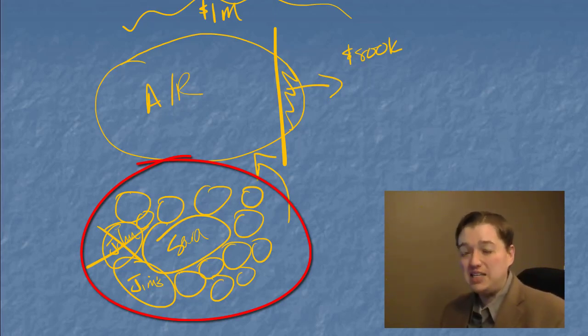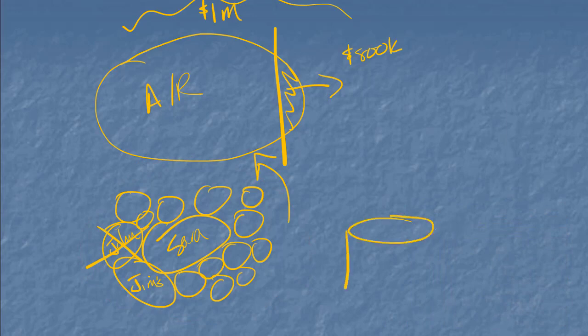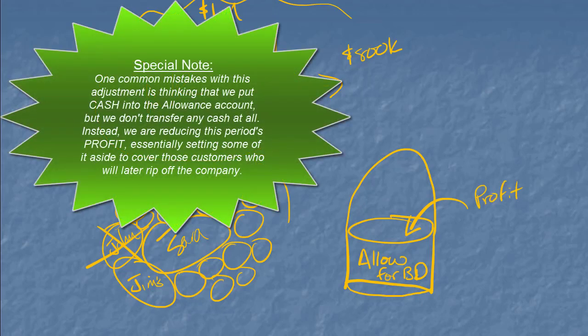So instead, we came up with a different idea for allowing us to keep track of what account receivable is really worth. What we decided to do was create, well, perhaps the best way to think of it is as a bucket. It's not a very good picture, but hopefully you get the idea. We created this bucket that we call the allowance for bad debt.